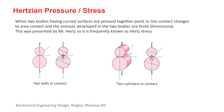Hertzian pressure or stress. When two bodies having curved surfaces are pressed together, point or line contact changes to area contact and the stresses developed in the two bodies are three-dimensional. This was presented by Mr. Hertz, so it's known as Hertzian stress. As you can see in the left picture, the contact between two balls is point contact. In the right picture, the contact between two cylinders is line contact.